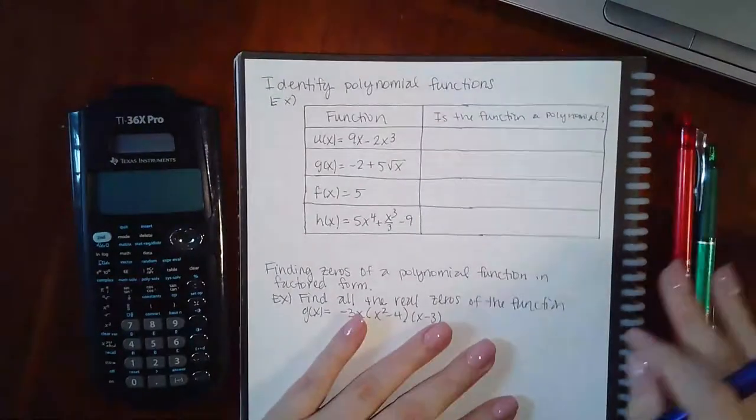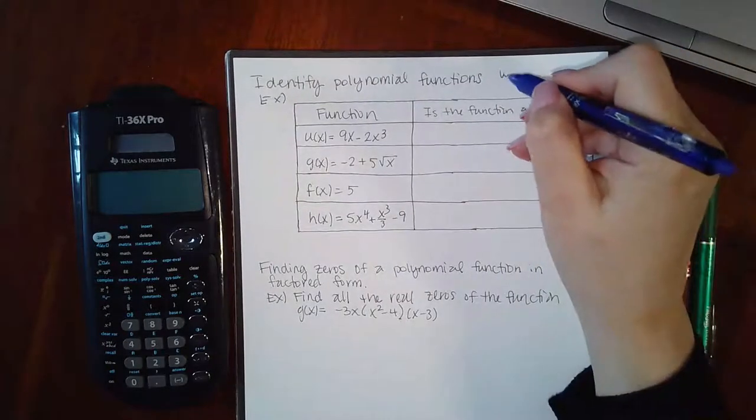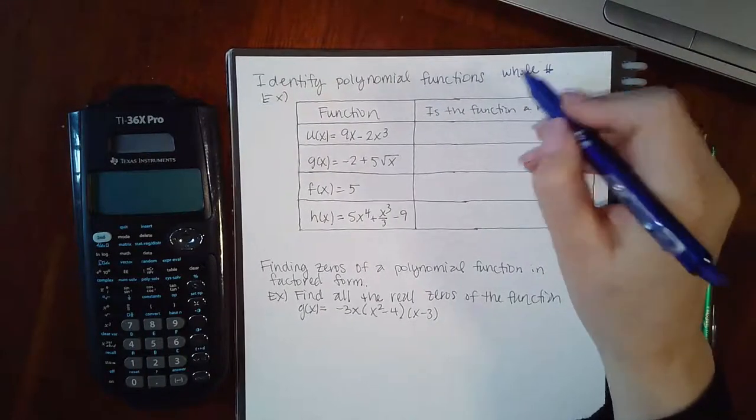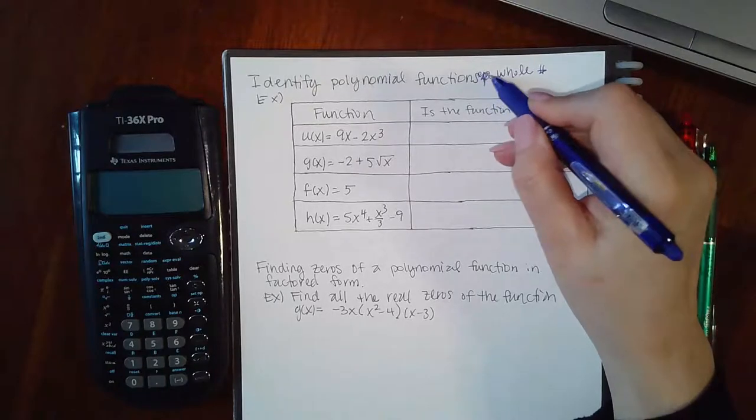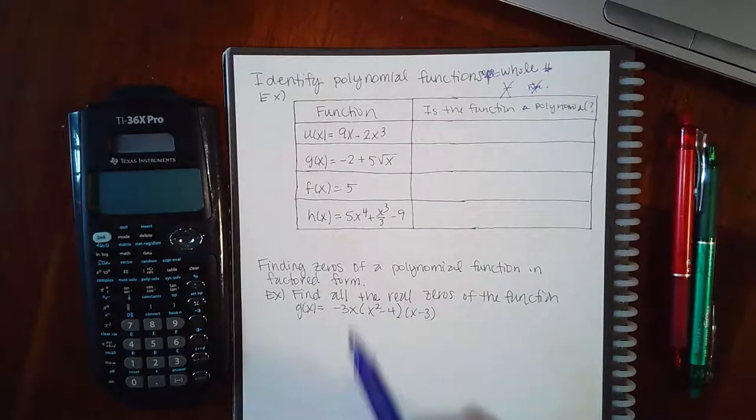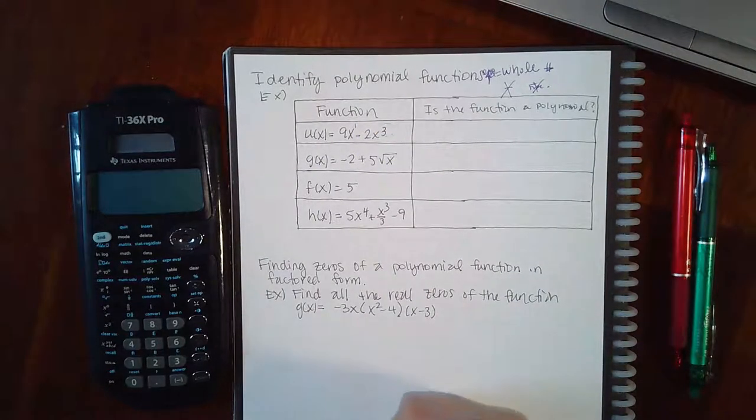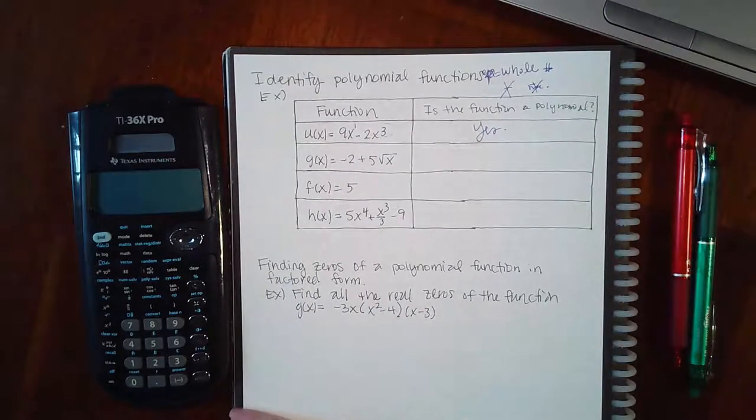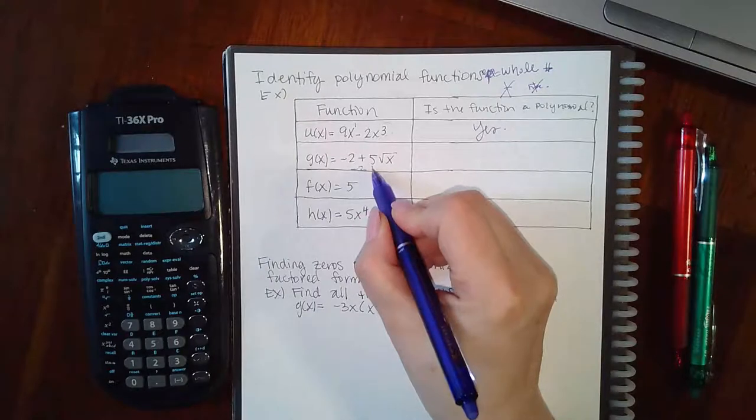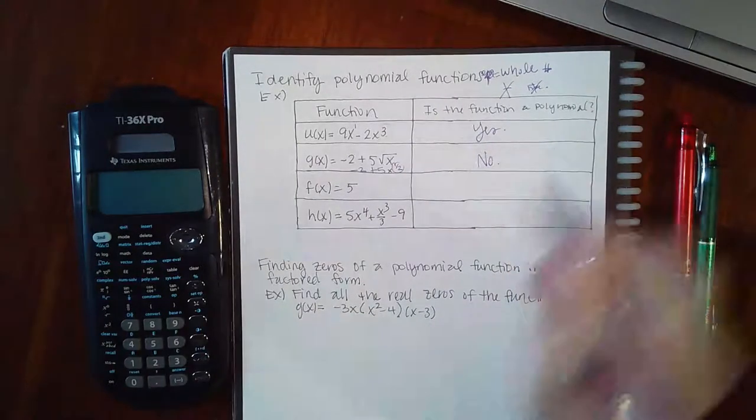Now the next topic is identifying polynomial functions. A function is a polynomial as long as the exponent of x is a whole number. In order for it to be a whole number, that means it cannot be negative and it cannot be a fraction. Here you have an exponent of 1 and an exponent of 3, both of those are positive whole numbers, so this is a polynomial function. Whereas here you can write this as an exponent one half, but that's a fraction exponent and those are not considered polynomials.